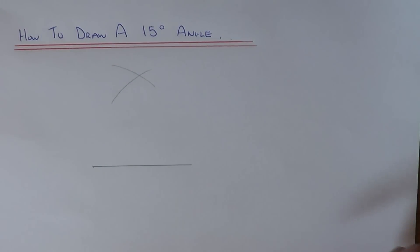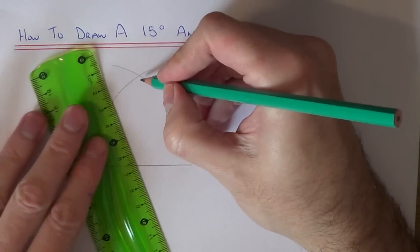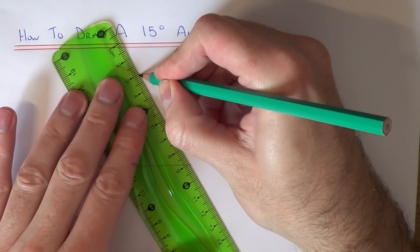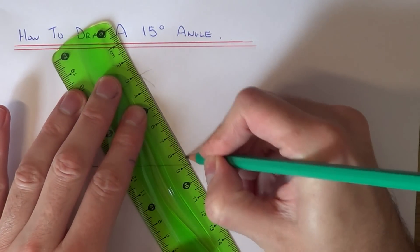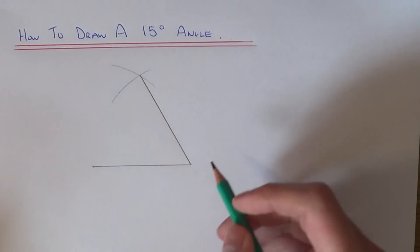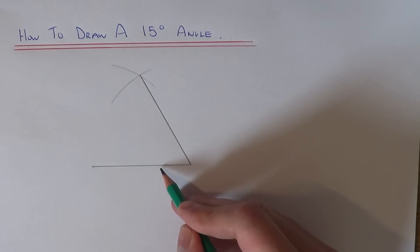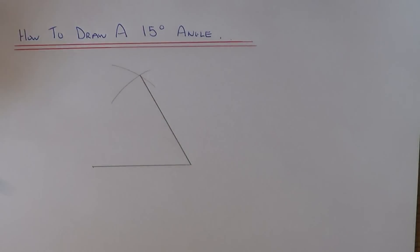Now join the intersection to the end of the line. This angle here will be 60 degrees. We're now going to bisect this angle to give us a 30 degree angle.